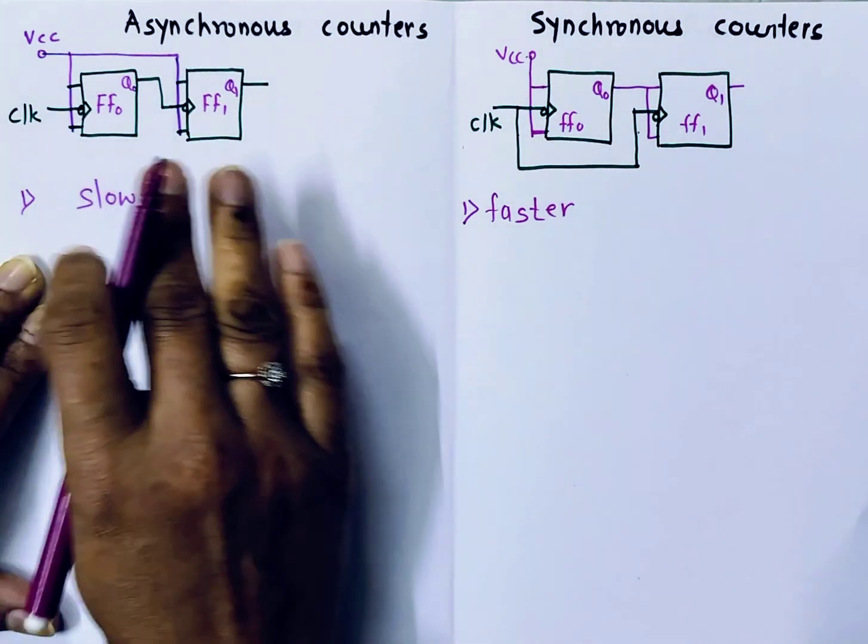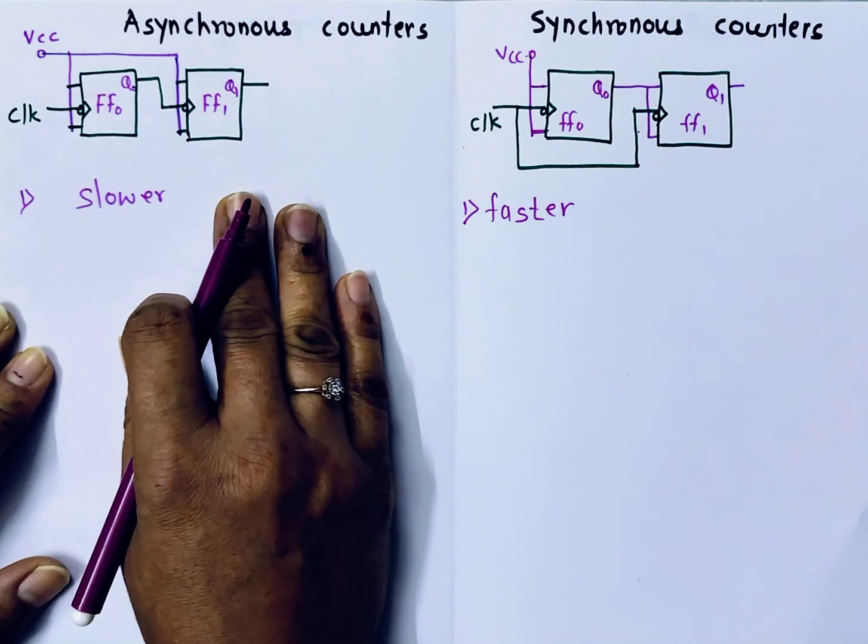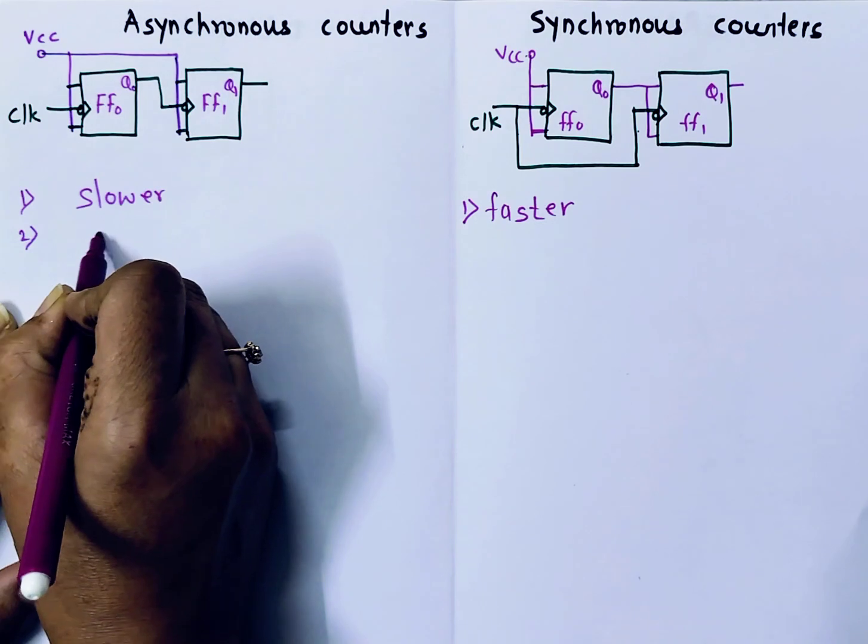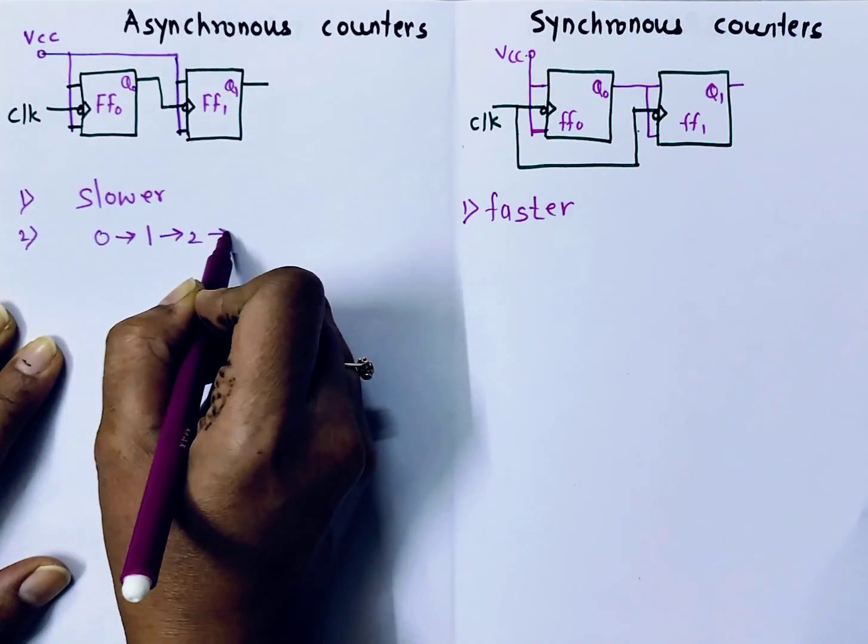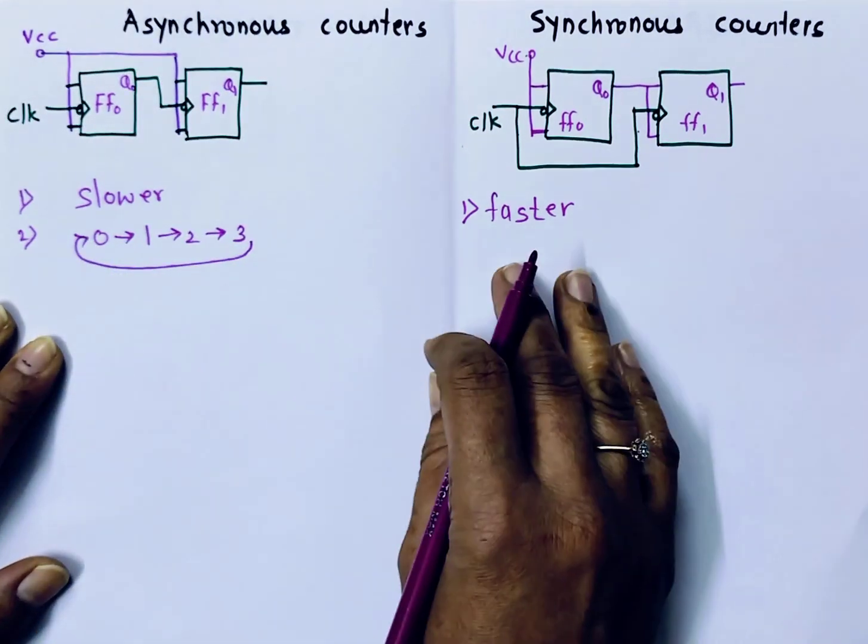Another thing is, in case of Asynchronous counters, counters can be up counters or down counters. In case of up counters, Asynchronous counters will generate count like 0, then 1, then 2, then 3, and then again, it will come back to 0.